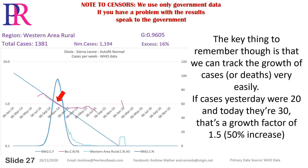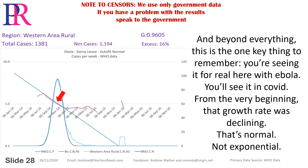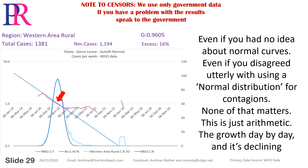The key thing to remember, though, is that we can track the growth of cases or deaths very easily. If cases yesterday were 20 and today they're 30, that's a growth factor of 1.5 — a 50% increase. And beyond everything, this is the one key thing to remember: you're seeing it here for real with Ebola, and you'll see it in COVID. From the very beginning, that growth rate was declining. That's normal, not exponential. This is just arithmetic — the growth rate, day by day, is declining.